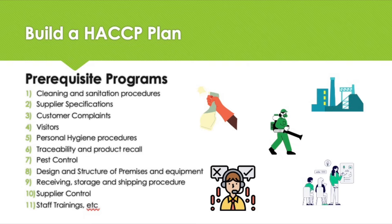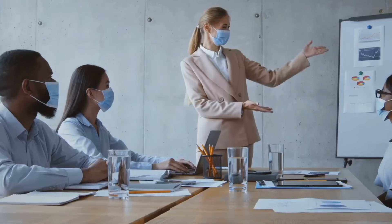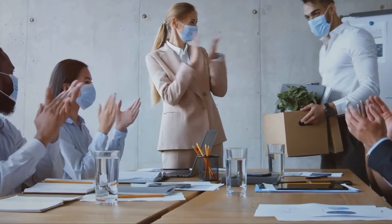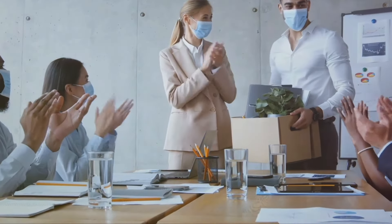Common prerequisite programs may include, for example, cleaning and sanitation procedures, personal hygiene, traceability and recall programs, pest control programs and training. Receiving, storage and shipping procedures are also included. The HACCP plans are prepared for each product or process and identify possible hazards and controls in place to make sure the hazards are prevented, eliminated or controlled to ensure acceptable levels in the food product.